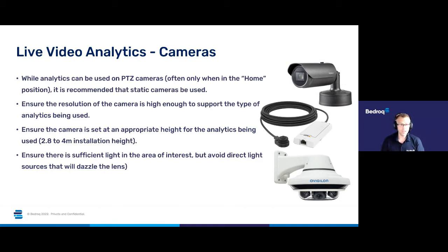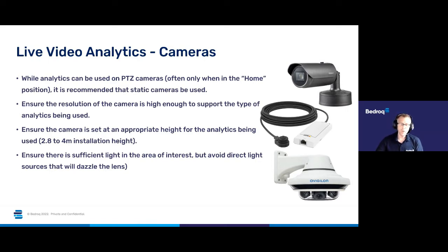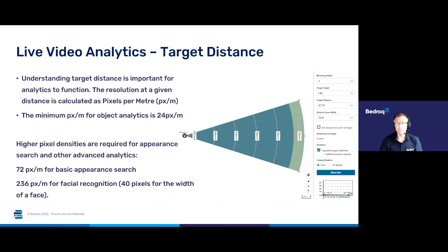The tilt is also important — 30 to 45 degrees of tilt is great for object analytics and appearance searches. Usually 10 to 15 degrees is needed for full facial recognition, though if it's a little bit higher it can often still be managed. Ensuring sufficient light while avoiding direct light is important as it can dazzle the lens. One of the most interesting cameras shown is the Axis pinhole camera, which has analytics built in — a lot of the analytics that the larger cameras have — and can be switched on and used straight away. There's also a 360-degree camera and a standard static camera shown.